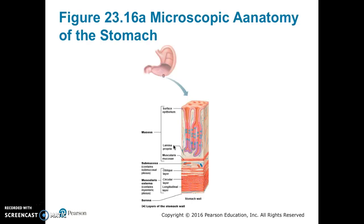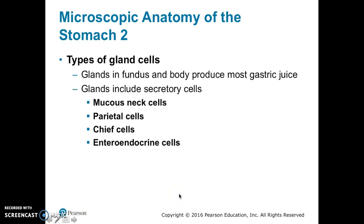The mucosa is dotted with gastric pits which lead into gastric glands, which produce the gastric juices. Figure 21.16a shows the microscopic anatomy of the stomach. The thick mucosa of simple columnar epithelium is dotted with gastric pits leading to the gastric juice-secreting gastric glands. Below that is the submucosa layer, followed by the three layers of muscularis externa, and then the serosa.